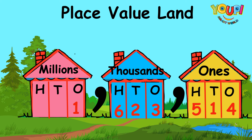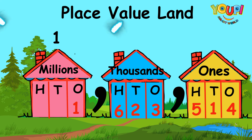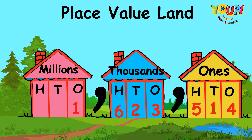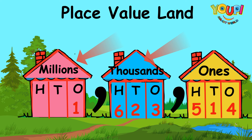Let's try another number. Remember: you begin by reading the numbers in the house farthest to the left. When you get to a comma or a gate, you say the last name of the family.